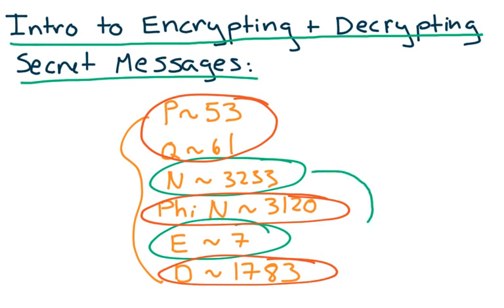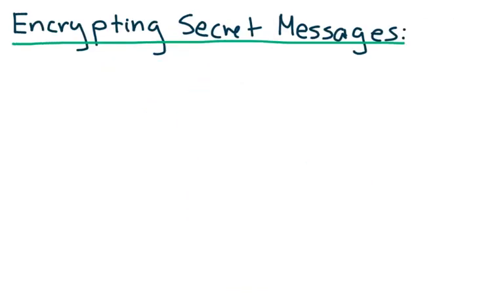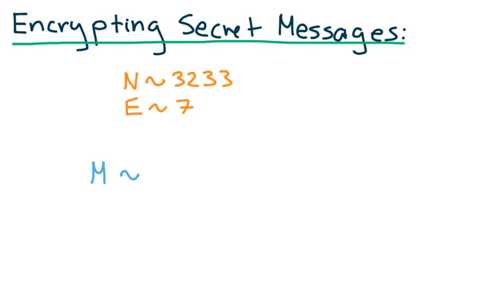Then the sender will use the values of n and e to encrypt his message. And then the key generator will use the value of d to decrypt it. So first we're going to talk about encrypting secret messages. n and e are the two values that the sender has to work with since they're the only two public key values and the sender only has access to public key values. So the sender is going to use these values to encrypt his secret message. We'll call this message that he's going to encrypt m.